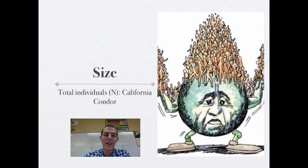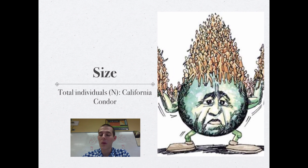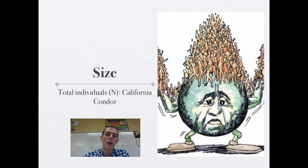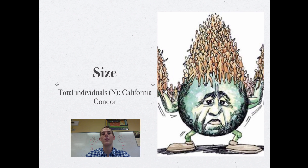Scientists look at size to know essentially whether a population is healthy or not. An example is the California condor. In the 1980s, there were only about 22 of these individuals living in the wild. Scientists recognized this huge problem, so they captured all the condors, started breeding them in captivity, and then released them back to the wild. As of 2009, the California condor population was up to 300. Noting the significant decrease in population size gave scientists a clue that something was wrong so they could act.